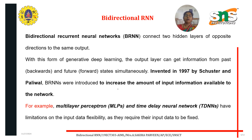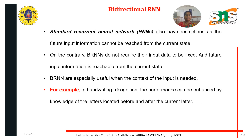With this form of generative deep learning, the output layer can get information from past and future states simultaneously. BRNNs were introduced in 1997 by Schuster and Paliwal to increase the amount of input information available to the network. For example, multi-layer perceptrons and time delay neural networks have limitations on input data flexibility, as they require their input data to be fixed.